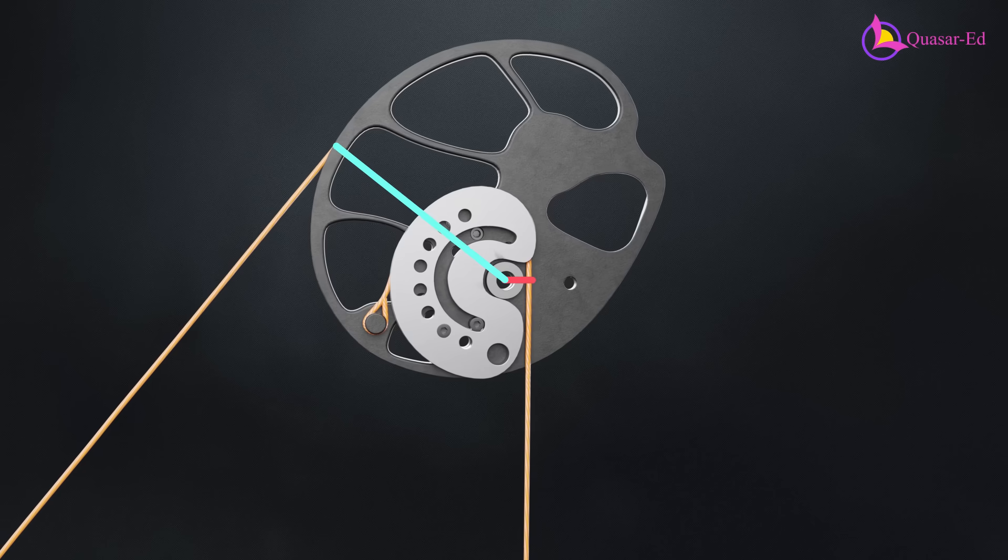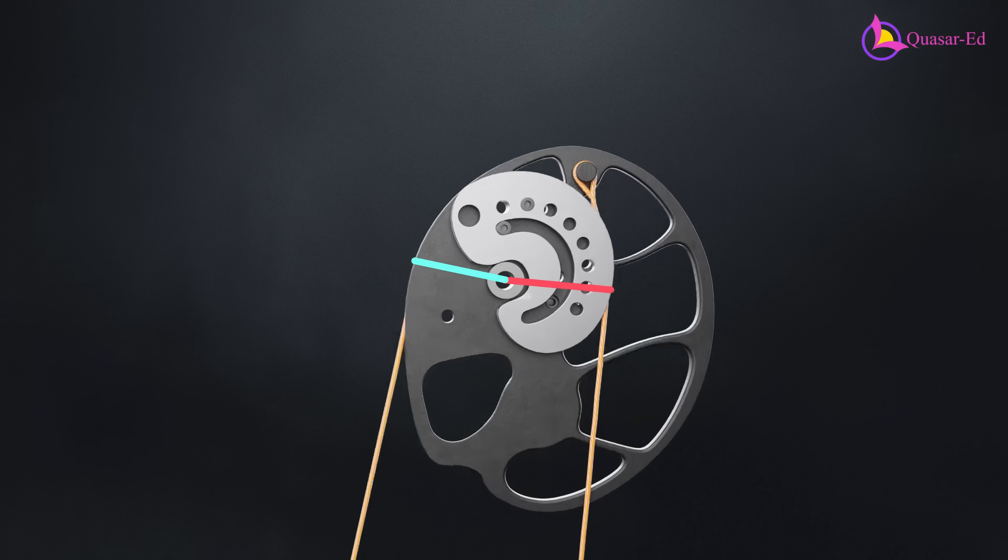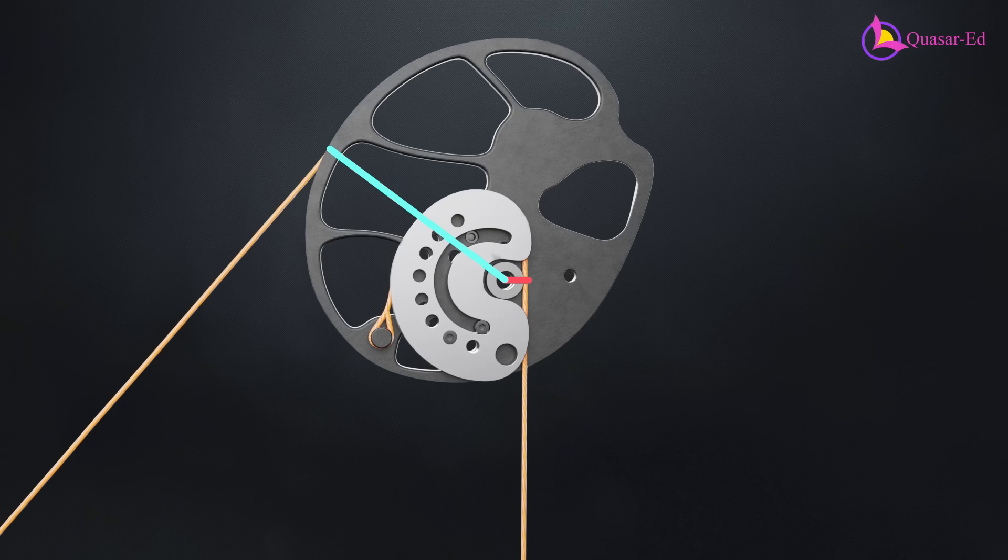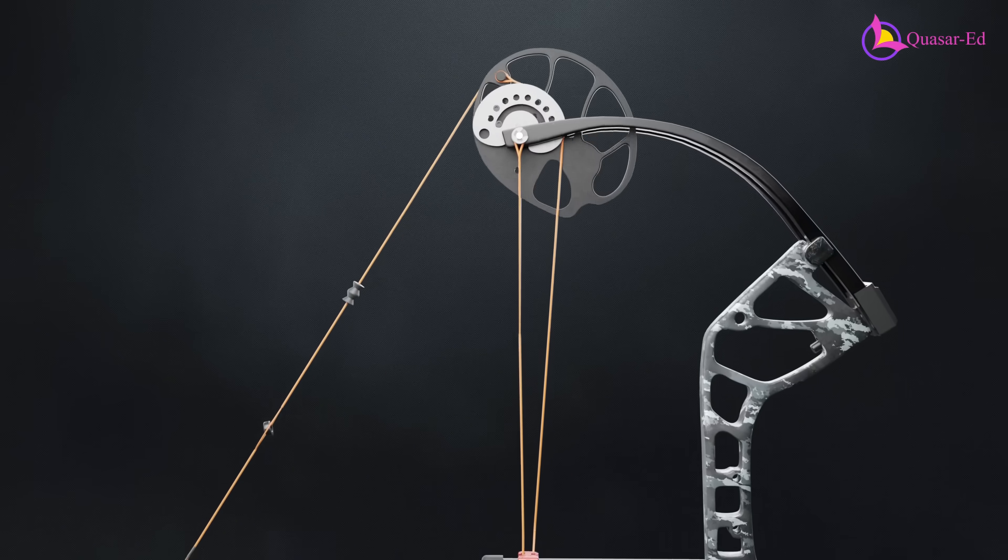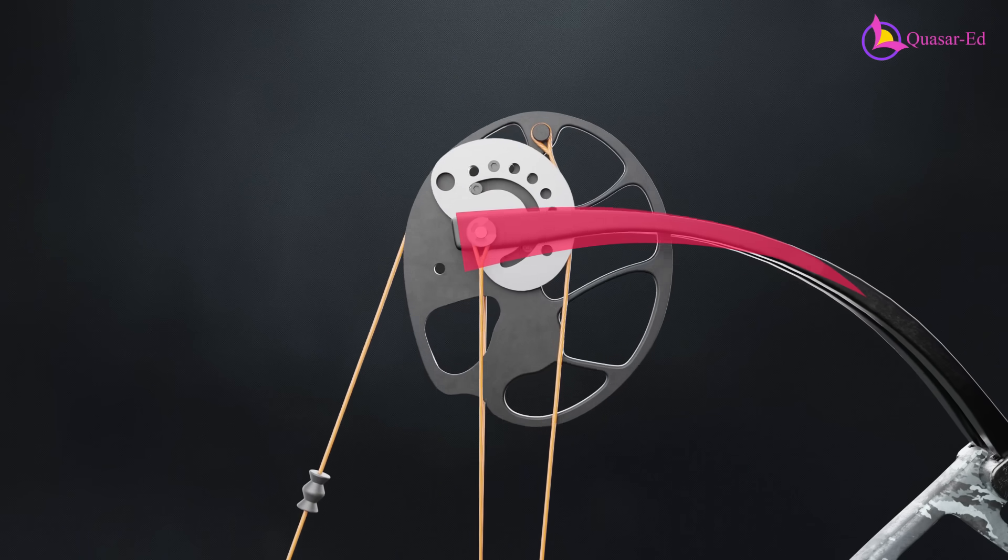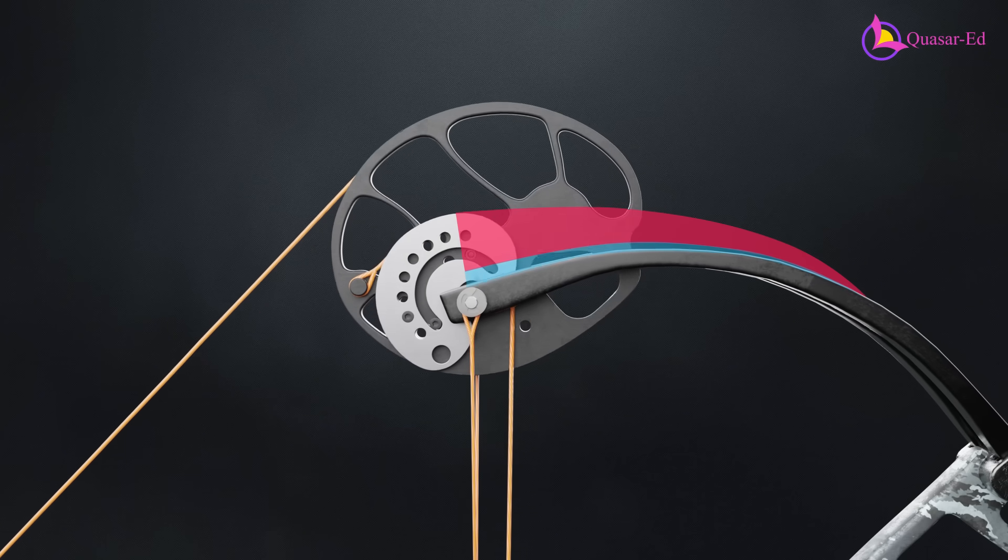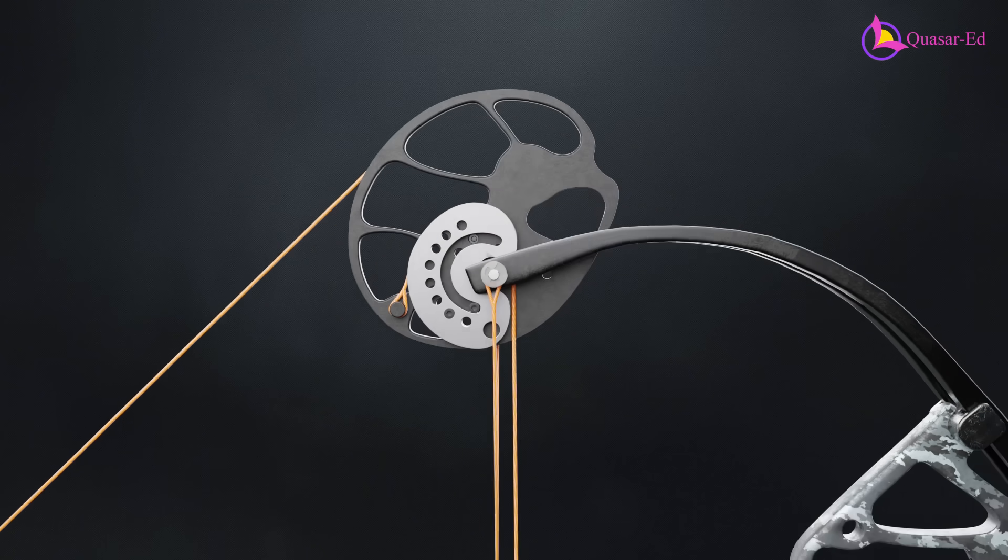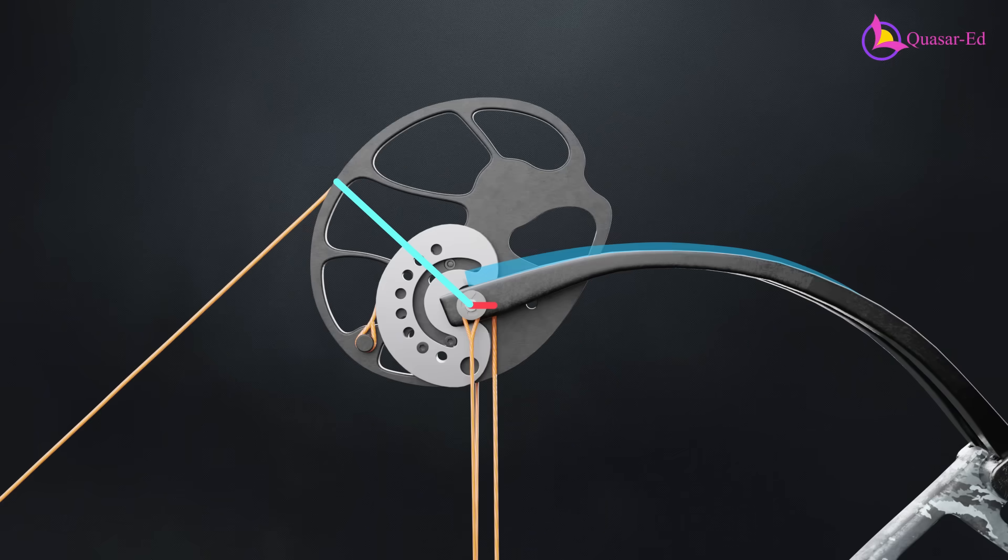However, cams allow the mechanical advantage to vary throughout the draw cycle. A higher mechanical advantage reduces the draw weight, while a lower mechanical advantage increases it. During the middle of the draw, the bus cable winds up more, causing the limbs to bend further. Near full draw, the cam shifts to a higher mechanical advantage, reducing the effort needed to hold the bow string. This is what creates the let-off effect.